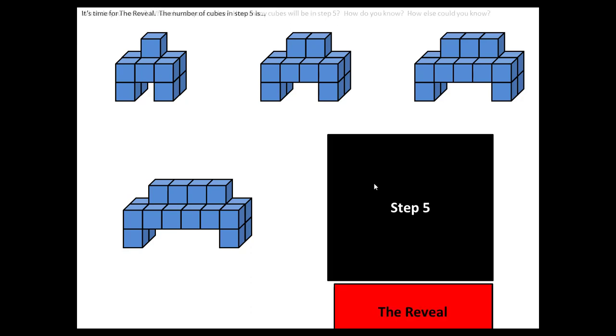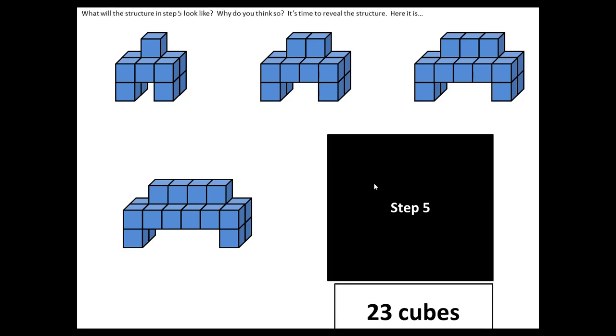When you click again, you'll see that the red reveal box appears. And on the top, the text changed again. It's time for the reveal. The number of cubes in step five is. So you know that on the next click, that number is going to be revealed. So when you click, the number is revealed.